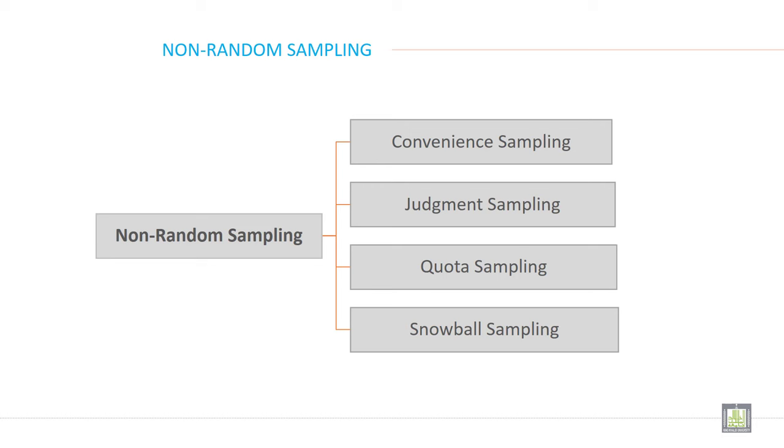The first one is convenience sampling, the second is judgment sampling, the third is quota sampling, and the fourth is snowball sampling.